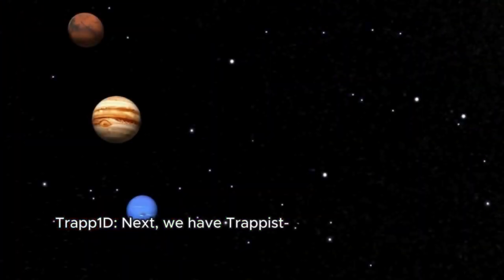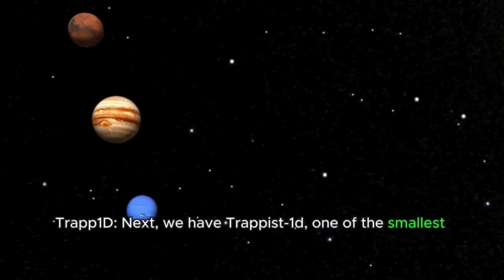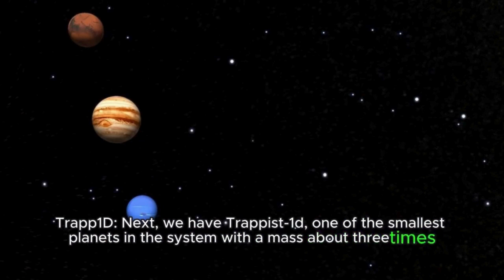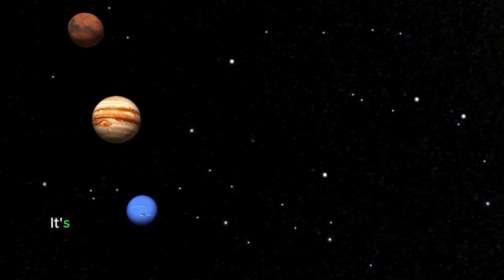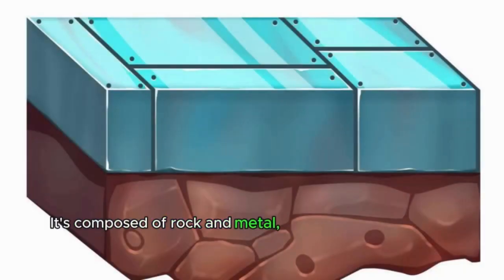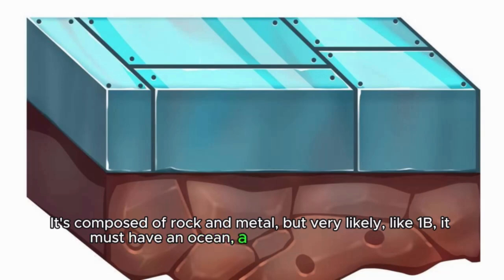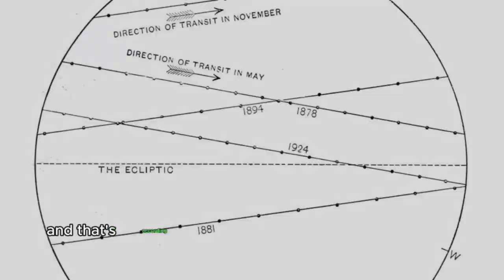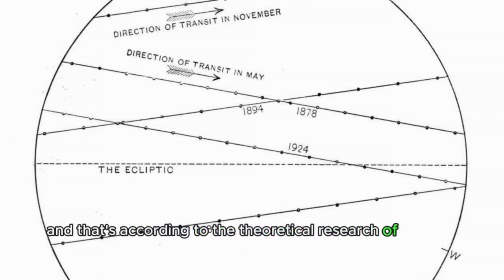TRAPPIST-1d. Next, we have TRAPPIST-1d, one of the smallest planets in the system, with a mass about three times smaller than Earth. It's composed of rock and metal, but very likely, like 1b, it must have an ocean, a layer of ice, or a dense atmosphere, according to the theoretical research of its mass and radius.